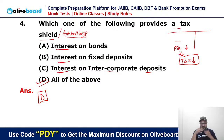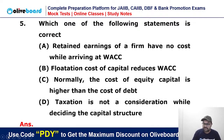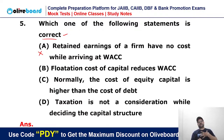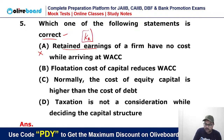An intercorporate deposit is one where one company deposits money with another company, and the company receiving the deposit has to pay interest on it. So D is the answer. Question number 5: which of the following statements is correct? Statement one says retained earnings of a firm have no cost while arriving at weighted average cost of capital — this is incorrect. In finance, retained earnings do have a cost, called the cost of retained earnings, denoted as Kr.